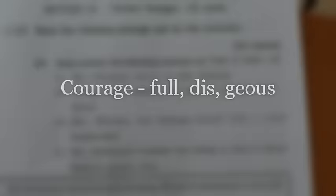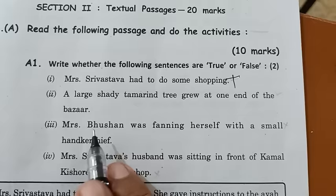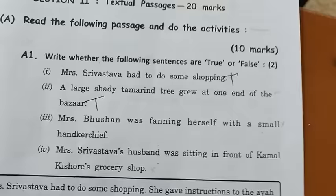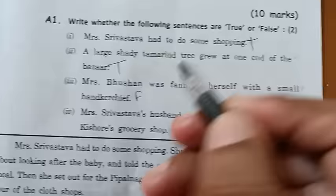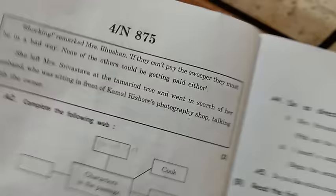Here is the textual paragraph and we have to do true or false. 'Mrs. Srivastava had to do some shopping' — yes, it is true. 'A large shaded tamarind tree at the end of the bazaar' — yes, it is true. 'Mrs. Bhushan was fanning herself with a small handkerchief' — this is false, because in the passage it says 'large handkerchief.' 'Mrs. Srivastava's husband was sitting in front of Kamal Kishore's grocery' — this is also false, because it was a photography shop, not a grocery shop.